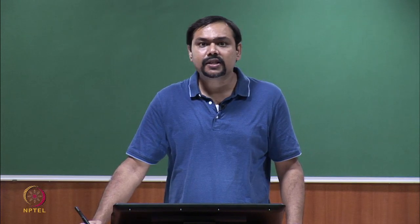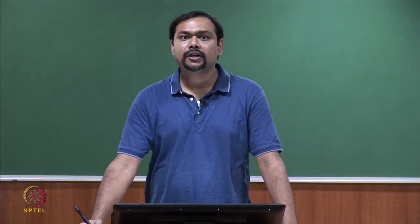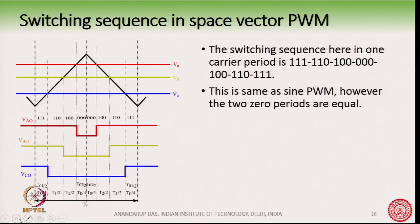Let us now see what is the switching sequence in space vector PWM. This is a repetition of what we have done earlier. In space vector PWM, the same switching sequence 1 1 1, 1 0 1, 1 0 0, 0 0 0, 0 0 1, 0 0 1, 1 0 and 1 1 1 — the same switching sequence with ABC reference waveforms, the same switching sequence as sinPWM.